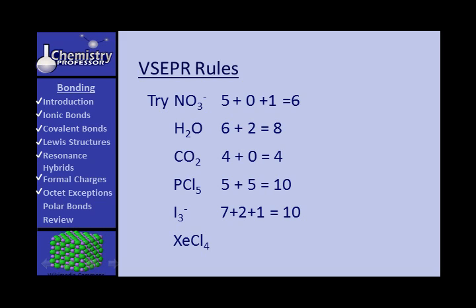For XeCl4 (xenon tetrachloride), we pick up eight from xenon and four from the four chlorines — eight plus four gives twelve.